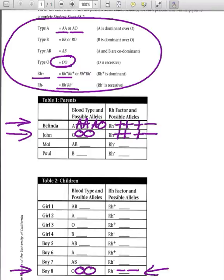Now on your own, try to figure out the different blood types and the different Rh factors for the rest of the children and the parents.